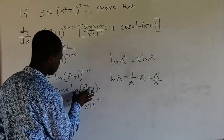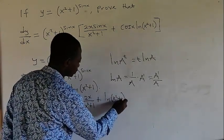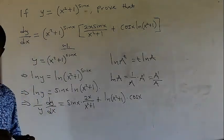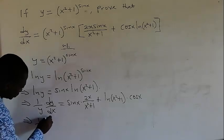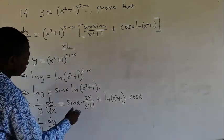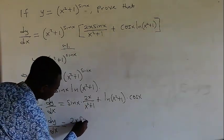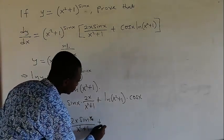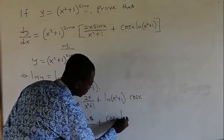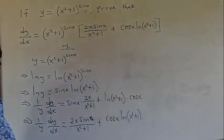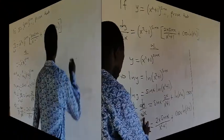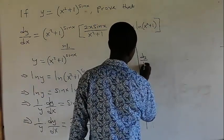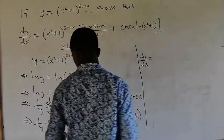Plus, keep ln(x squared plus 1), then differentiate sin x, which gives cos x. So we have 1 over y times dy/dx equals 2x sin x over x squared plus 1 plus cos x times ln(x squared plus 1). Now let's find dy/dx by multiplying both sides by y. So dy/dx equals y times the expression.